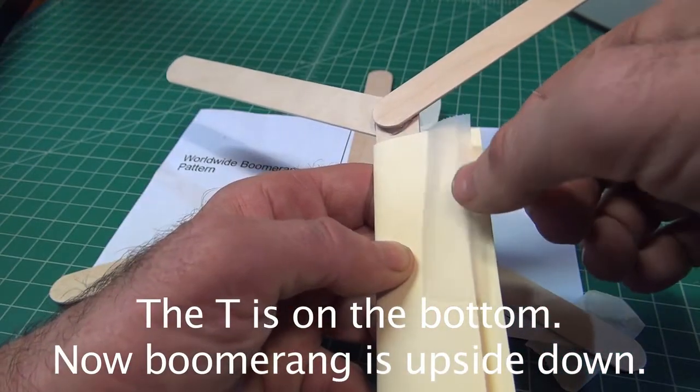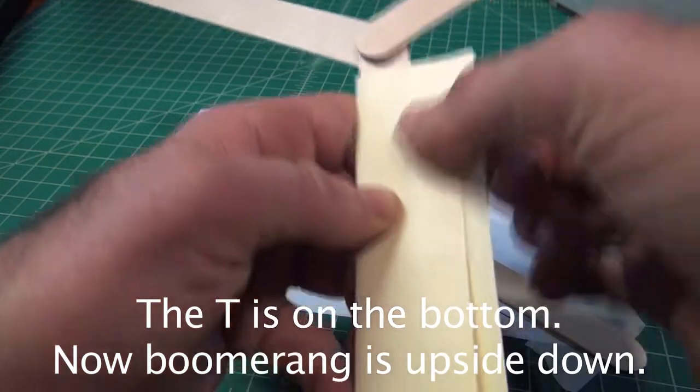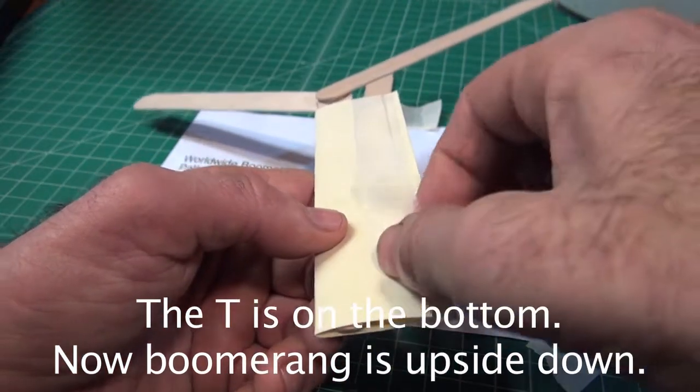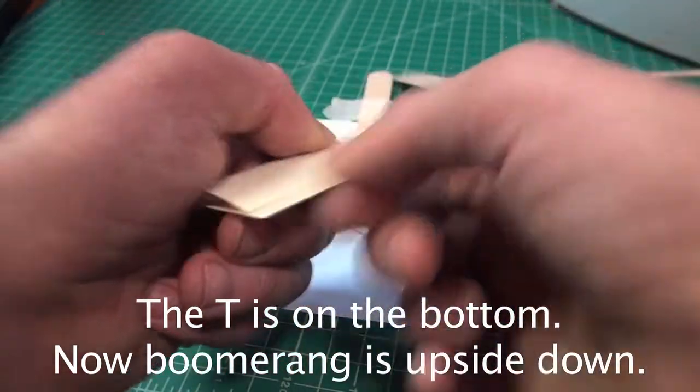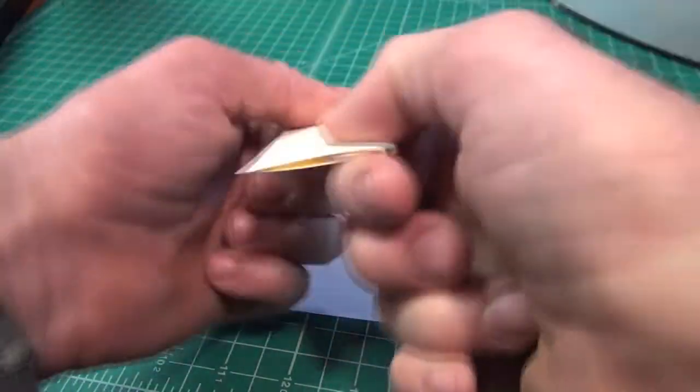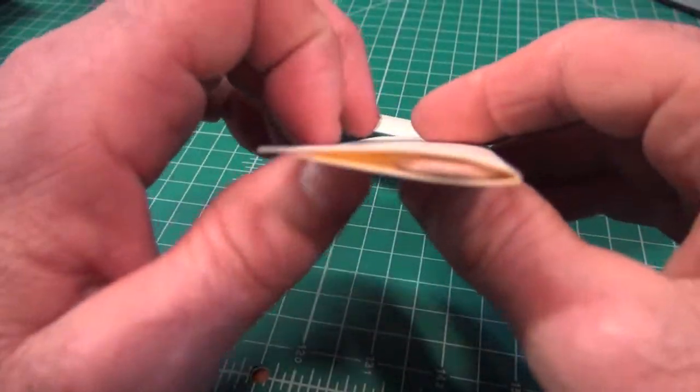Flip it over so the T is on the bottom. It doesn't matter how you orient it. Tape the edges of the airfoils together, again, half at a time, and press hard. Press on the front too, to make the airfoil as thin as possible.